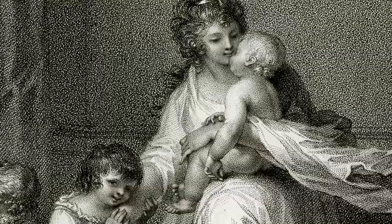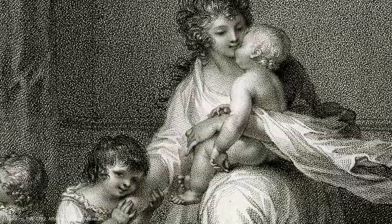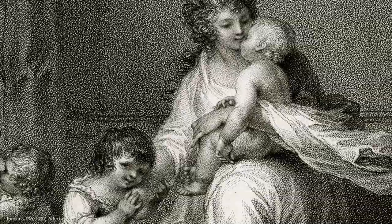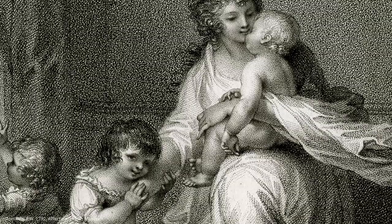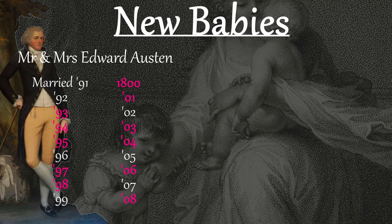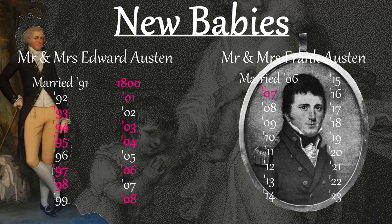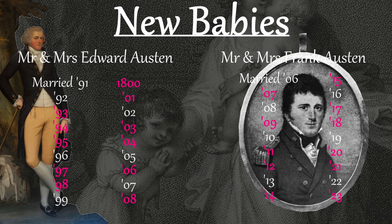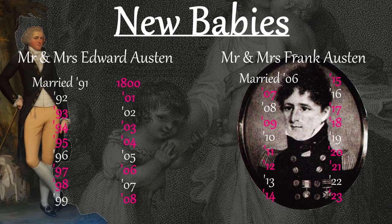Jane's mother had three babies in three years following her marriage. When Jane's older brothers James and Edward were married, they began having children immediately as well. Her first nieces, Anna and Fanny, were born in 1793 when Jane was 17. James's first wife died in 1795 without another living child, but Edward and his wife Elizabeth had new babies almost annually: 1793, 1794, 1795, 1797, 1798, 1800, 1801, 1803, 1804, 1806, 1808. When Frank married in 1806, the schedule of babies was similar: 1807, 1809, 1811, 1812, 1814, 1815, 1817, 1818, 1820, 1821, 1823 — and he was an admiral in the Navy and out at sea for long stretches at a time.